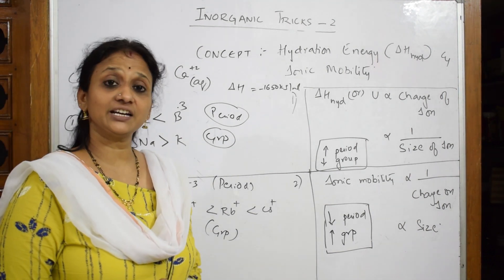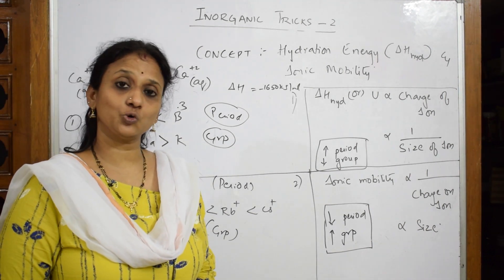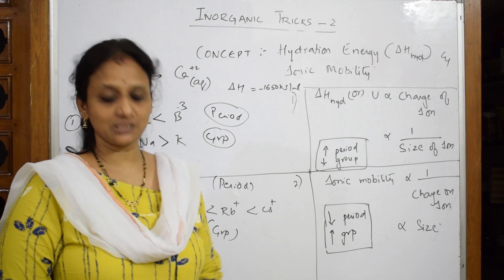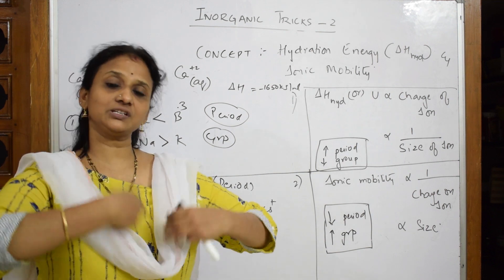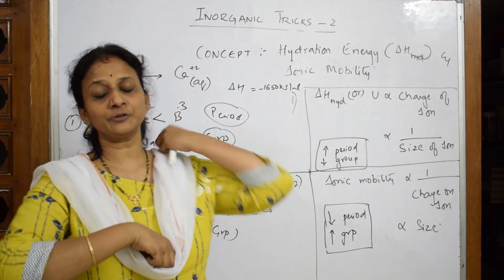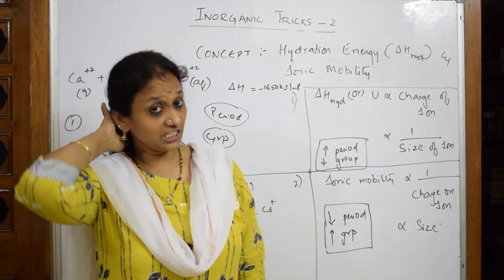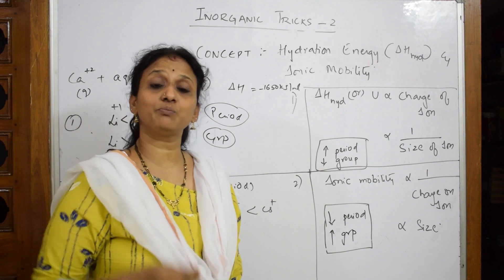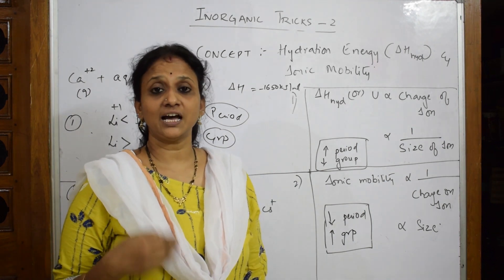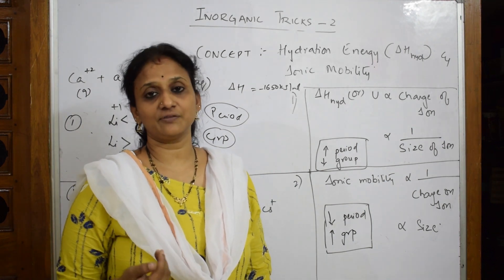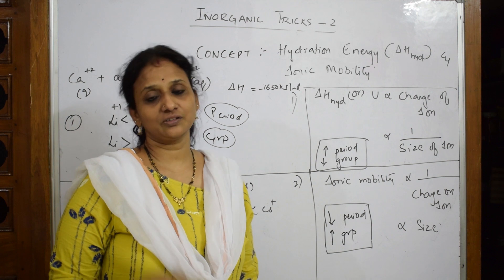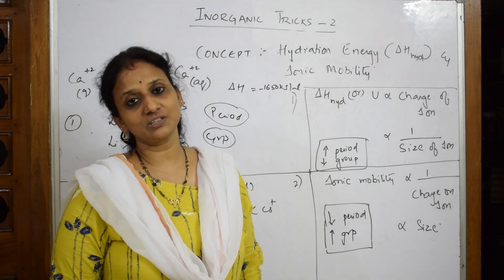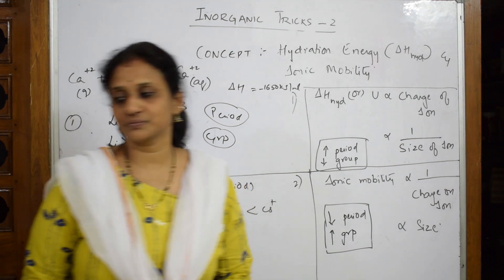These are the different trends — ionic mobility and hydration enthalpy. Hope the concepts are clear. Now I'll be starting with the different reasoning questions from the JD Lee book — very important book, very important concepts. I'll be dealing with them one after the other, so keep noting. Thank you for watching.